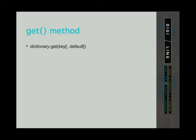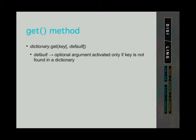The method takes one mandatory argument and one optional. The optional argument is activated only if the key is not found in a dictionary. So, there are two cases. In the first case, we don't define the optional argument — that is, we only define the key.